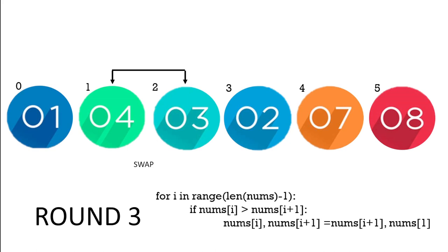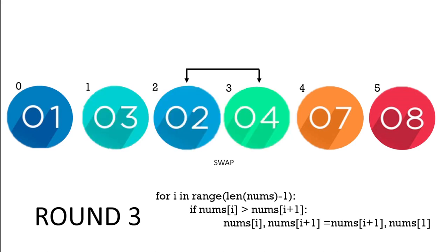Next round, round three. One and four, we don't need to swap. Four and three, we do need to swap. Four and two, we do need to swap. So now that round is finished because we now have the correct order from four, seven, and eight onwards.